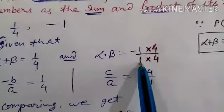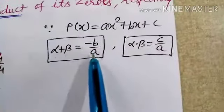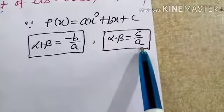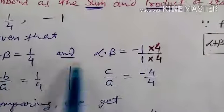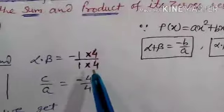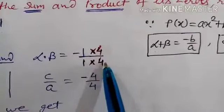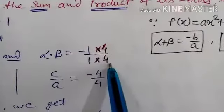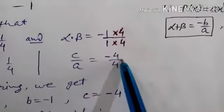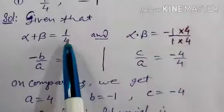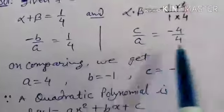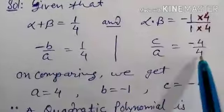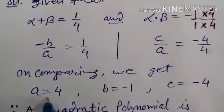Write minus 1 with denominator 1. Now, alpha plus beta equals minus b by a — the denominator is a in both cases — but here the denominator is 4 and there it is 1. So first find the LCM of 4 and 1, which is 4. Make the denominator 4 by multiplying and dividing by 4: you get minus 1 times 4 equals minus 4, and the denominator is 4. So this gives 1/4 and minus 4/4. Now compare both sides where alpha plus beta equals minus b by a and alpha times beta equals c by a — if denominators are same, then a equals 4.